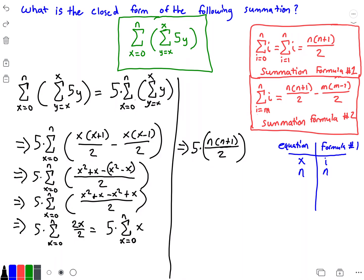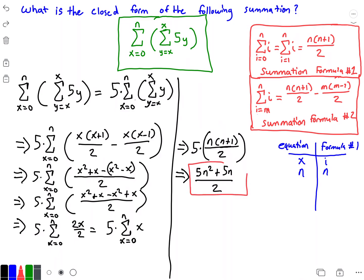So our final answer is 5 times N times (N plus one) divided by two, which we can also write as 5N squared plus 5N, all divided by two. And that is our closed-form answer.